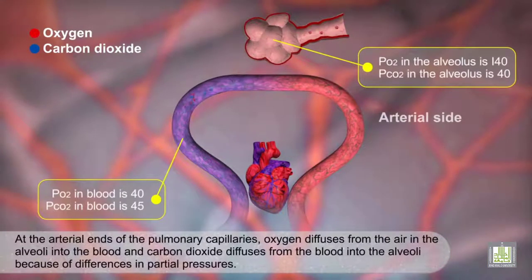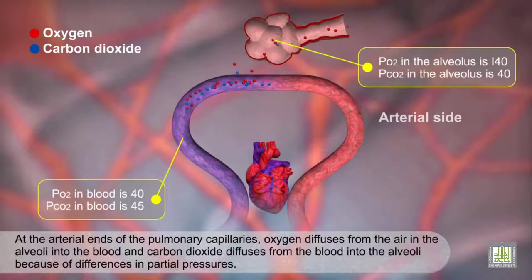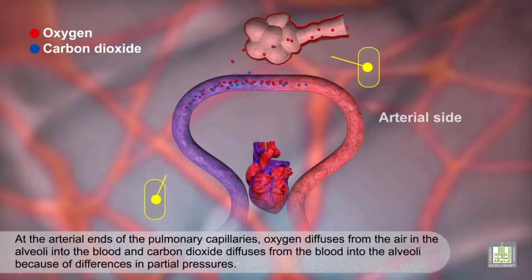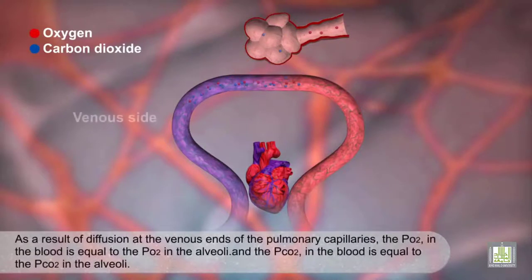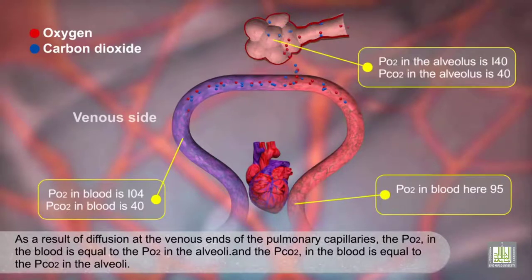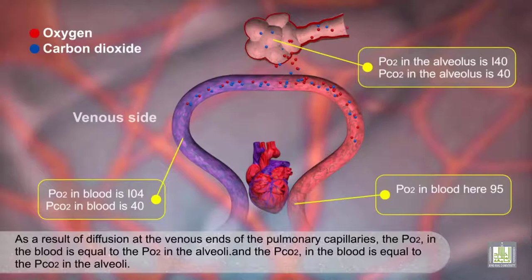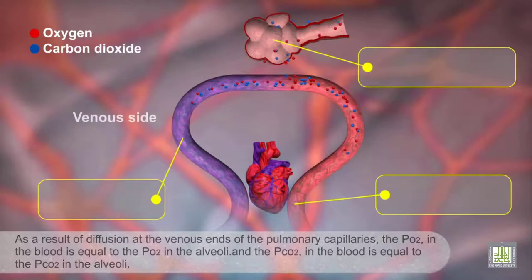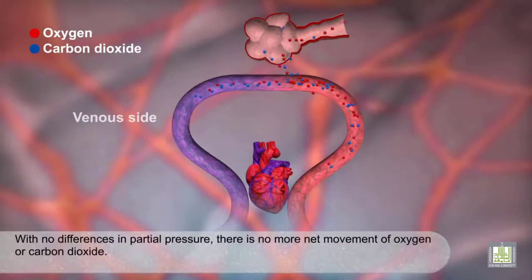At the arterial ends of the pulmonary capillaries, oxygen diffuses from the air in the alveoli into the blood, and carbon dioxide diffuses from the blood into the alveoli, because of differences in partial pressures. As a result of diffusion, at the venous ends of the pulmonary capillaries, the PO2 in the blood equals the PO2 in the alveoli, and the PCO2 in the blood equals the PCO2 in the alveoli. With no differences in partial pressure, there is no more net movement of oxygen or carbon dioxide.